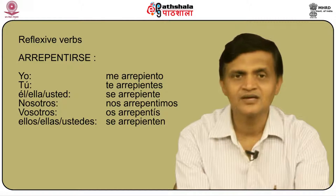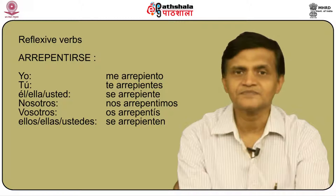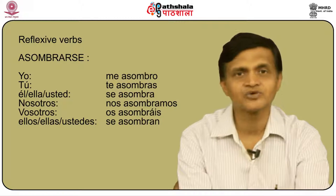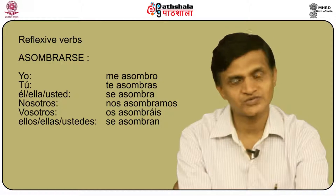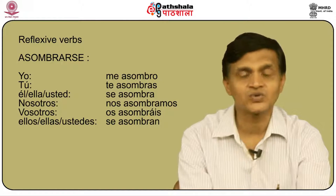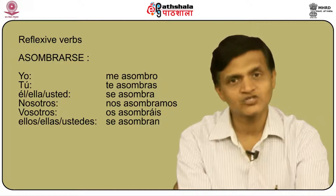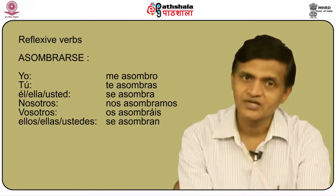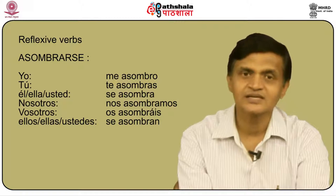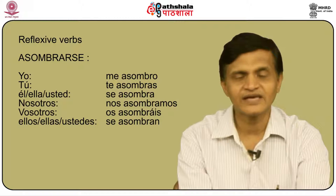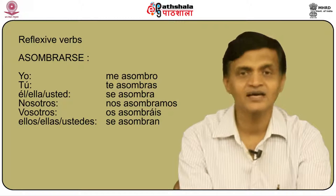Another verb is asombrarse. We have seen its conjugation previously, but let us revise it. Asombrarse is conjugated as: yo me asombro, tú te asombras, él/ella/usted se asombra, nosotros nos asombramos, vosotros os asombráis, and ellos/ellas/ustedes se asombran. It's very simple because now you know the pattern of conjugation for these reflexive verbs.